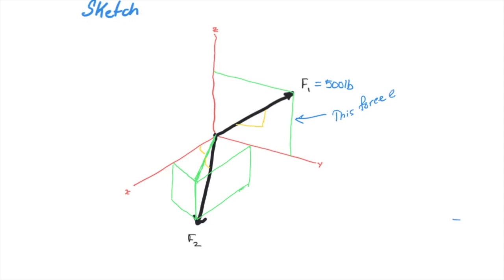The force F1 exists only in the y-z plane, so it has no x parameter. That's going to make our calculations a little bit simpler and very similar to our coplanar evaluations. For F1, the triangular method has a hypotenuse of 5, a rise of 3 in the z direction, and a run of 4 in the y direction, which allows us to break it into its y and z component forces.